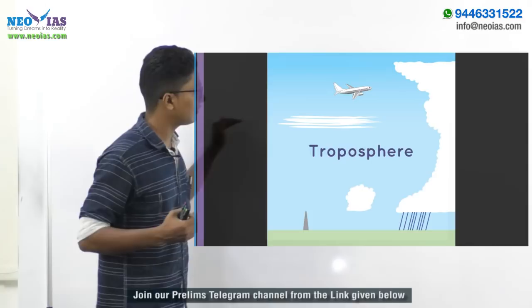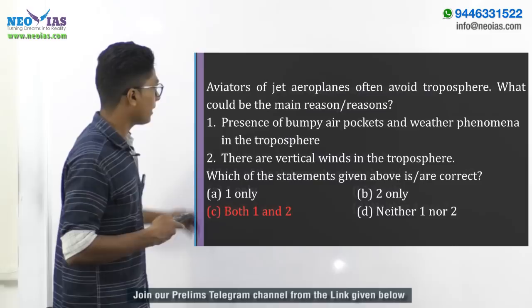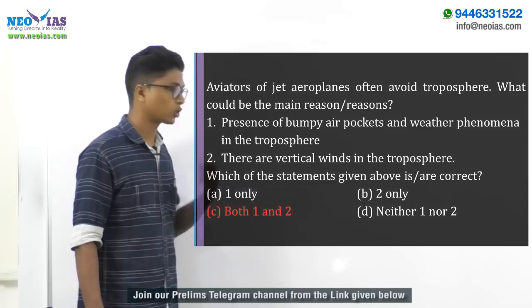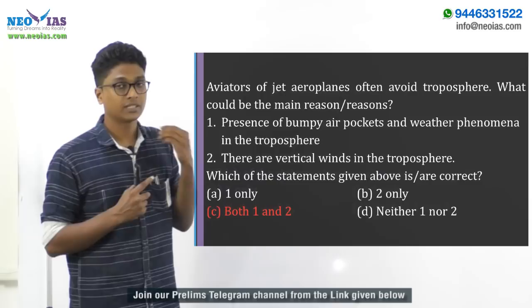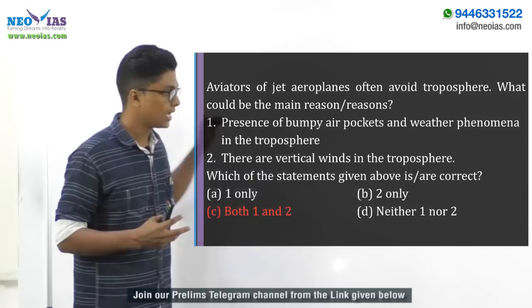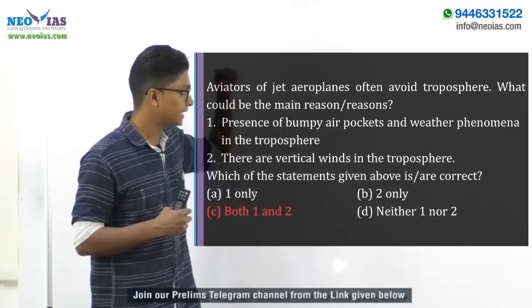Coming back to the question: jet aeroplanes often avoid the troposphere — what could be the main reason or reasons? The first reason is the presence of Bambi air pockets and weather phenomena in the troposphere. Bambi air pockets are regions where there is a change in pressure. Just like traveling on a road with potholes causes a jerky movement, pressure changes in the atmosphere make the movement of jet aeroplanes jerky.